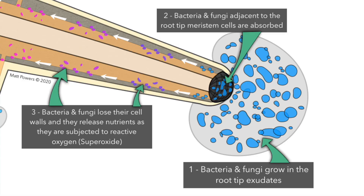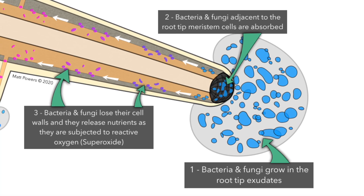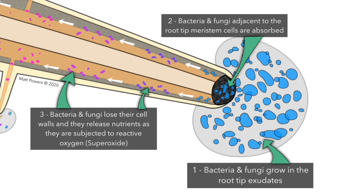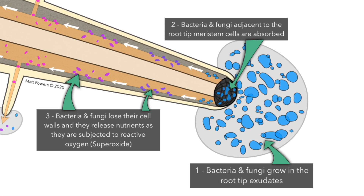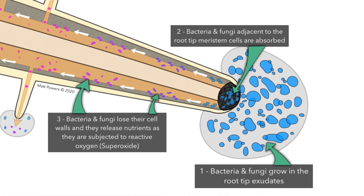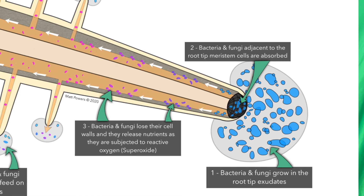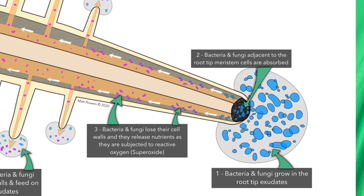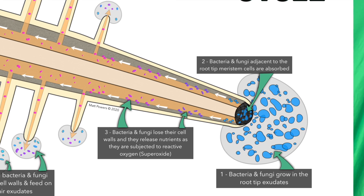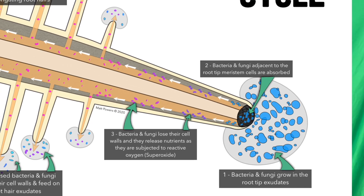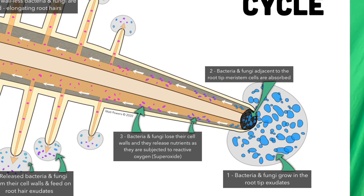Have you heard of rhizophagy? Rhizophagy is the process by which growing root tips — on all plants studied so far — have the ability to take in microbes, remove their cell walls using superoxide and reactive oxygen, and then feed on and even consume some of these fungi and bacteria. These microbes then circulate in the growing root hairs, repopulate, re-establish their cell walls, and eventually get released.